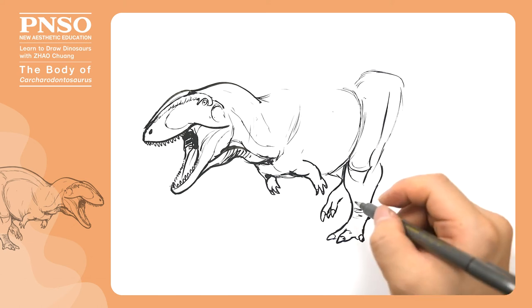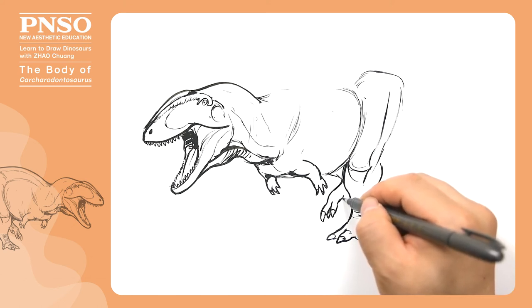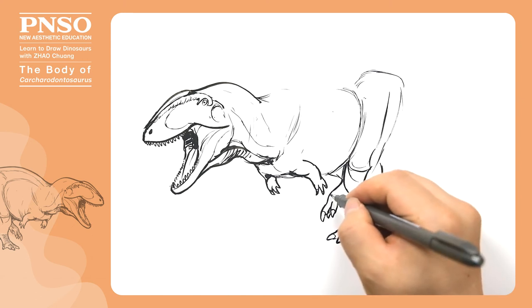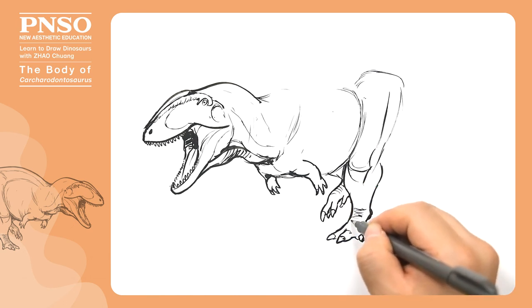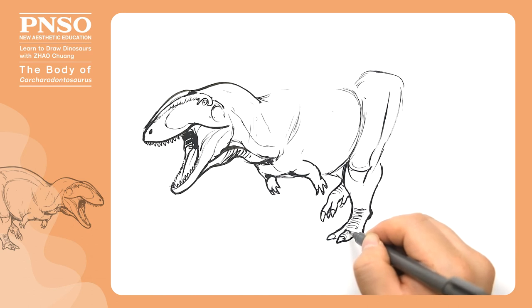Because of the angle, one toe of this foot was blocked. We can draw some big scales on the instep and the dorsal side of the toes.